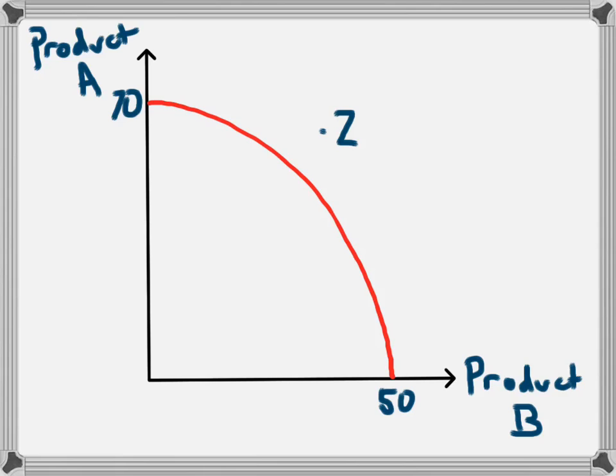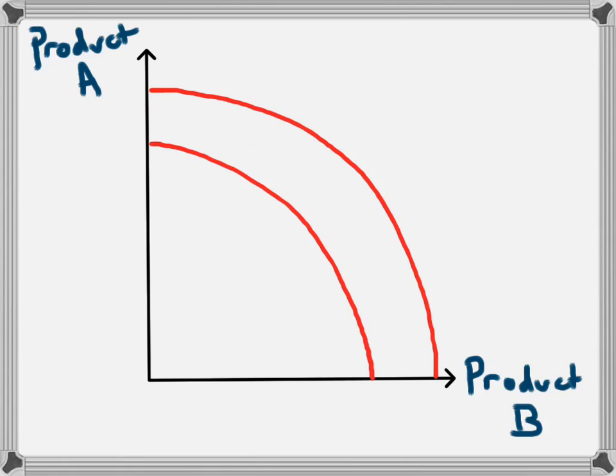Another way could be if there was an improvement in technology. If there is an improvement in technology, the resources in the economy can be used more efficiently, meaning more products can be produced with the same amount of resources. So an increase in the amount of resources, or an increase in technology, can lead to a shifting out of the production possibility frontier, and this can produce economic growth in an economy.